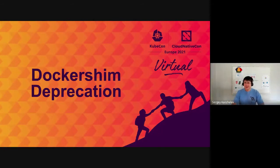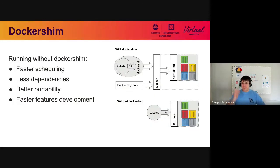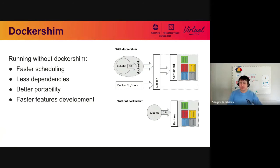Docker was the very first runtime that Kubelet was using to schedule containers. You can think of Kubelet as something that receives signals from the API and schedules containers on the machine. To schedule them, it uses Docker — it calls Docker Shim through the API called CRI, container runtime interface. Docker in its turn calls into containerd, and containerd schedules containers.